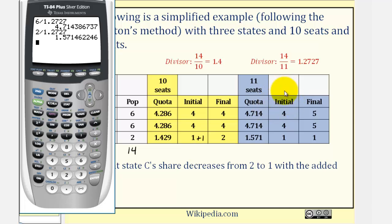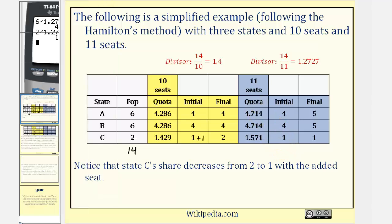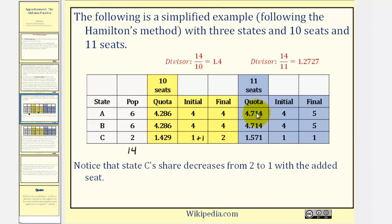And now to find the initial apportionment, or lower quota, we remove the decimal part, giving us an allocation of 4, 4, and 1. Notice how this sum is 9, but now because we have 11 seats, we have 2 extra seats, which would be awarded to the 2 states with the largest decimal part of the quota. Notice here that would be state A and B. So A gets an extra seat, and so does state B, giving a final allocation of 5, 5, and 1. So notice how when the seats went from 10 to 11, states A and B picked up an extra seat, but state C actually lost a seat. They went from 2 seats to 1 seat. This is an example of the Alabama paradox.